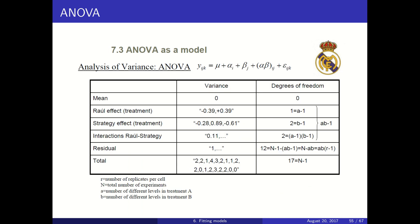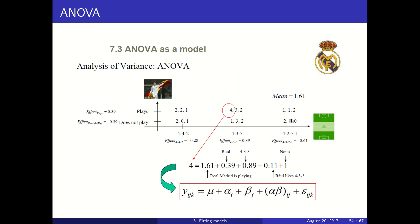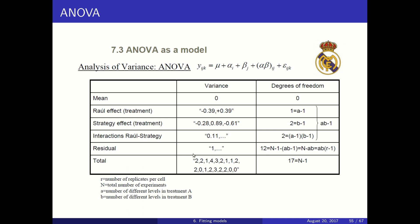In this example we had 18 matches: six combinations (two levels for one factor, three levels for another) times three matches per combination. Every observation gives a degree of freedom, so we have 18 degrees of freedom. But we need to estimate the mean, so we actually have 17 degrees of freedom available for this experiment.